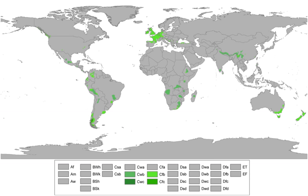Most oceanic climate zones, or at least a part of them, experience at least one snowfall per year. In the poleward locations of the oceanic climate zone, subpolar oceanic climates, described in greater detail below, snowfall is more frequent and commonplace.